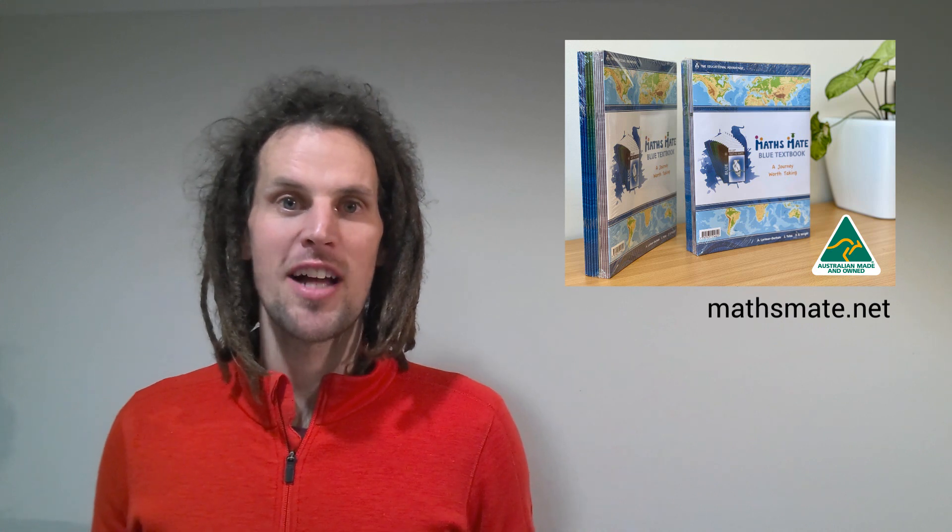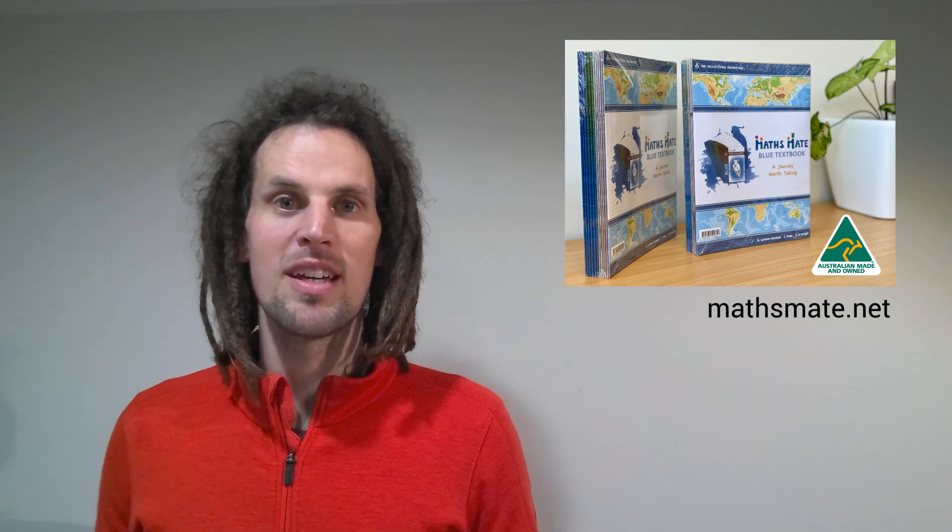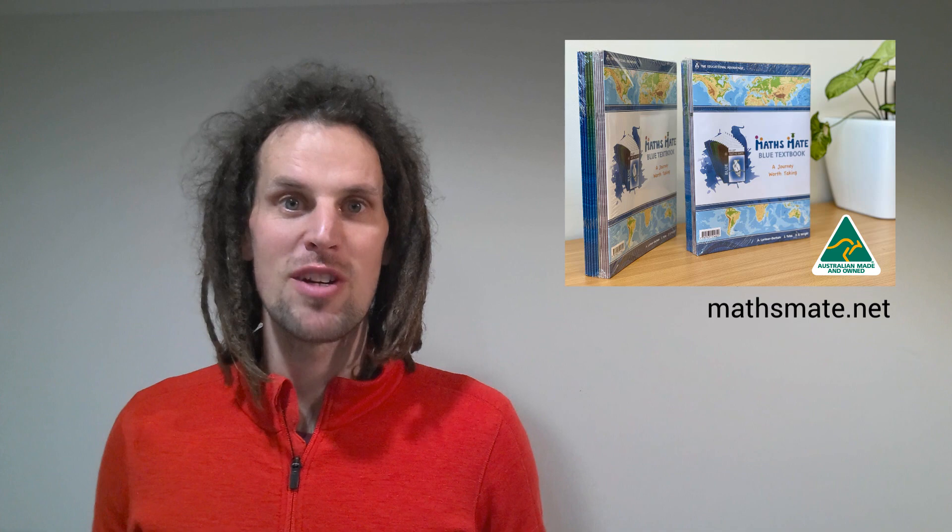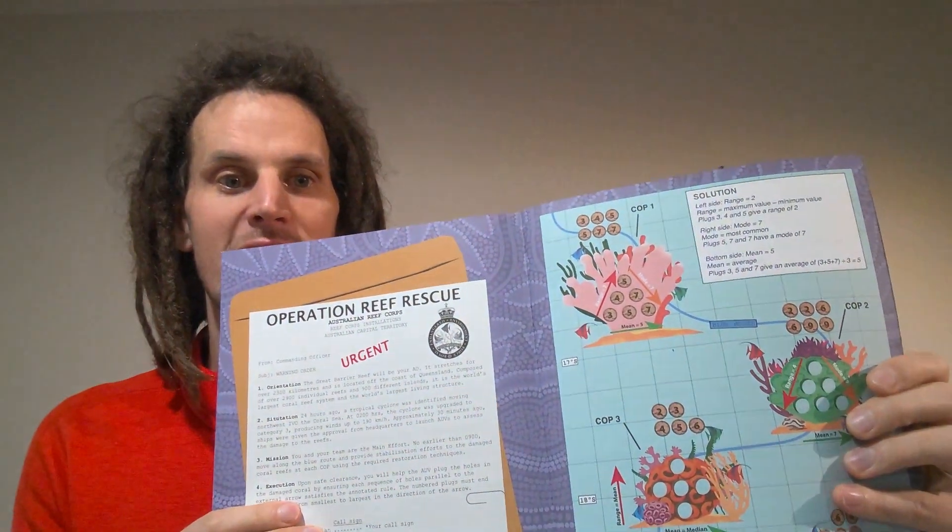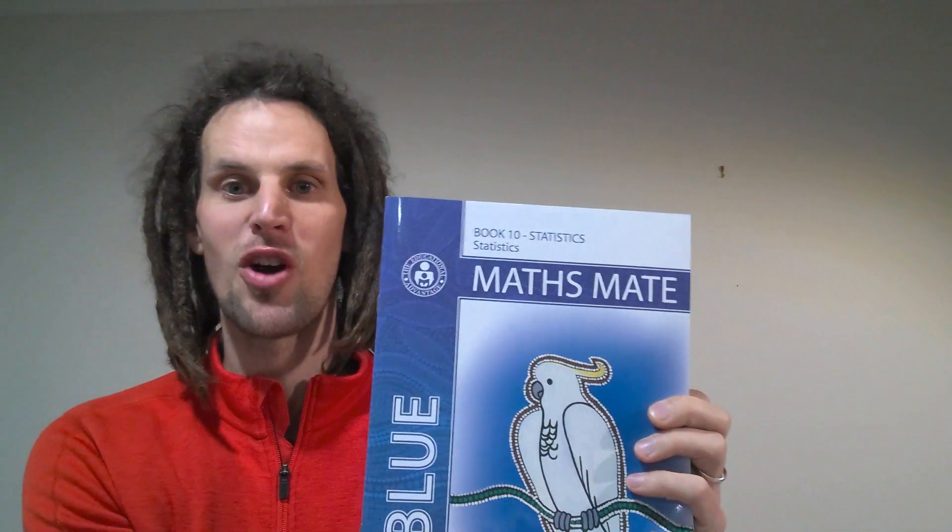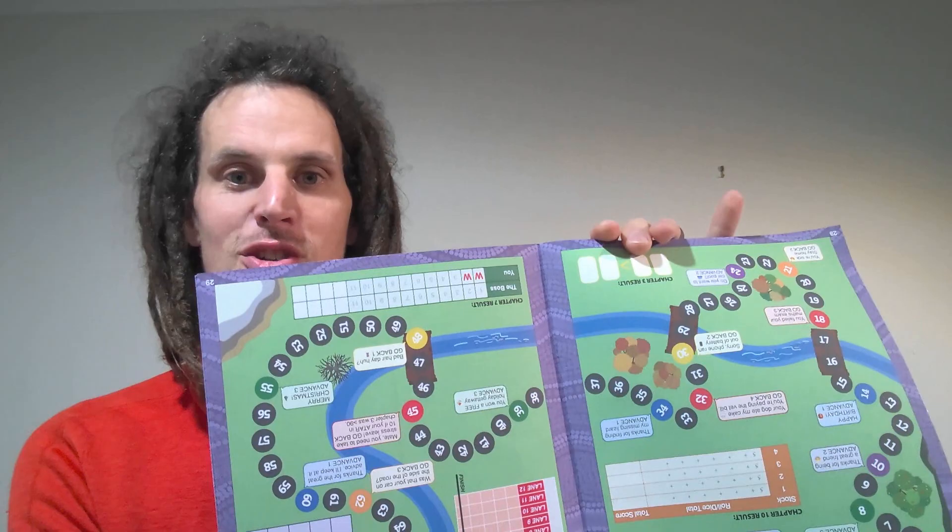If you're looking for number talks spanning the entire year 7 and 8 maths curriculum, then you've got to check out the MathsMate textbooks. Every lesson is designed to begin with a reasoning prompt to get students engaged in rich mathematical discussion, as well as every book and every major content area having games and puzzles to reinforce concepts, get kids applying their learning in a novel context, and having a whole bunch of intentional fun.